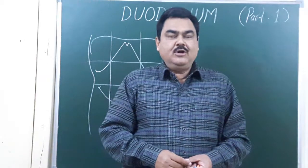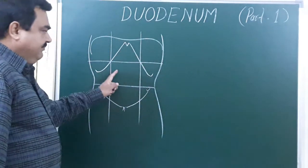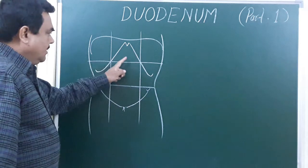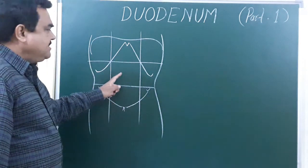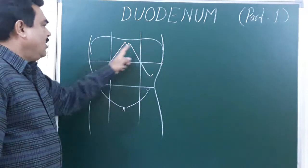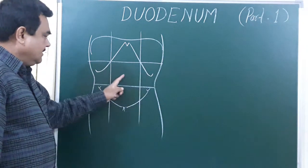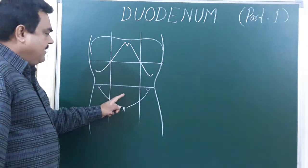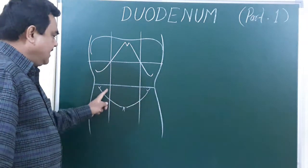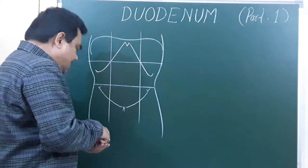Now we will discuss about the duodenum part 1. Here you can see the division of the abdominal cavity into nine regions: epigastrium, left hypochondrium, right hypochondrium, left lumbar, right lumbar, umbilical, hypogastric, left iliac, and right iliac regions.